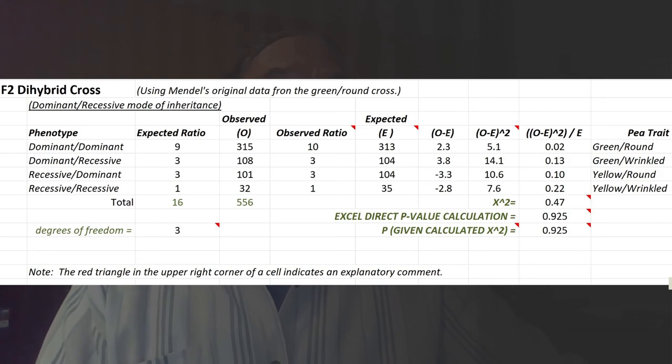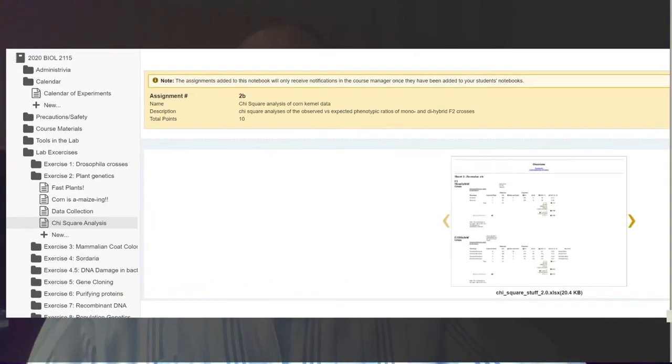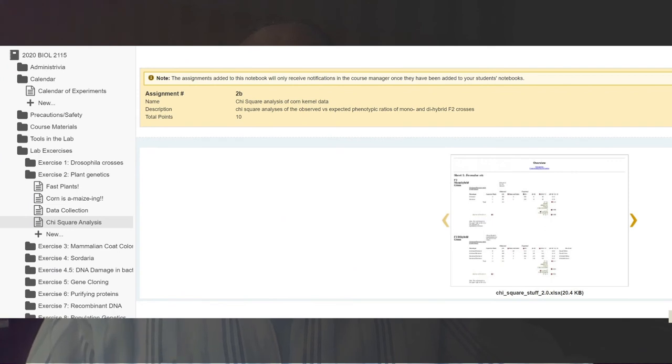Your assignment is coming up. Here's an easy way to find it: it's under the plant genetics section, the chi-square analysis. Here is assignment 2b. I've already put together a small spreadsheet for you to use. You have to input the relevant data with the relevant chi-square values. Notice, keep track of your degrees of freedom. Calculate the confidence that you have that any differences between the observed and expected ratios are due to chance or due to some other error.